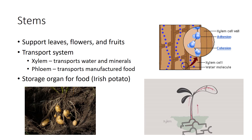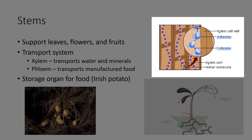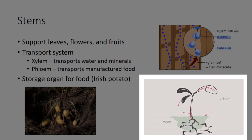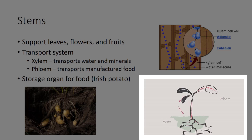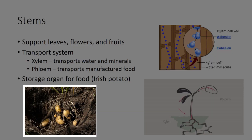Stems can be used to identify plants with some practice. The stem has several important functions. Stems are used to support leaves, flowers, and fruits. Stems contain important transport systems, including the xylem for transporting water and minerals, and the phloem for transporting manufactured food. Stems can be used to manufacture food, but to a lesser extent than the leaves. Stems can also act as a storage organ for food — an example of this is the Irish potato.